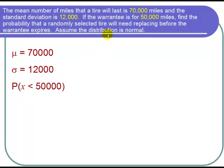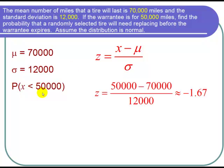This is a normal distribution that's given. Let's convert this to a standard normal distribution using the Z-score. Remember the formula is that Z is equal to X minus mu over sigma. We know that X is 50,000, mu is 70,000, and sigma is 12,000. So I plug those numbers in: 50,000 minus 70,000 over 12,000. I put that in a calculator and I got about negative 1.67.